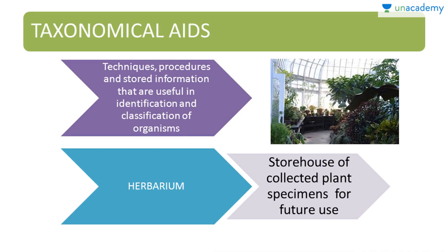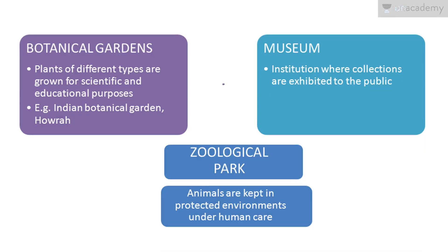Taxonomical aids are techniques, procedures, and stored information useful in the identification and classification of organisms. One important taxonomical aid is the herbarium — a storehouse of collected plant specimens for future use. Next is botanical gardens, where plants of different types are grown for scientific and educational purposes. An example is the Indian Botanical Garden in Howrah.